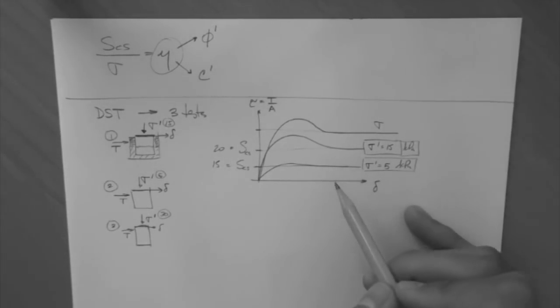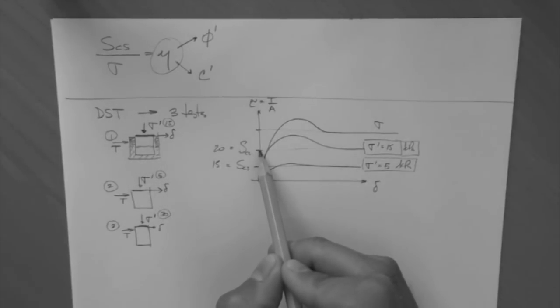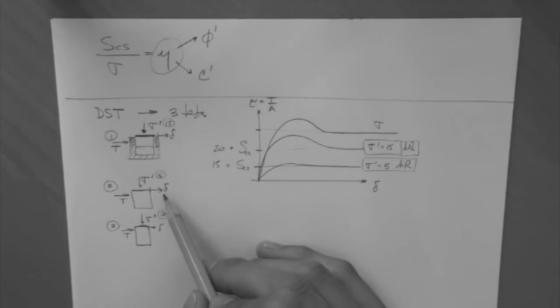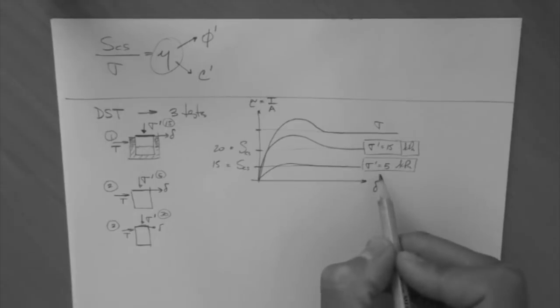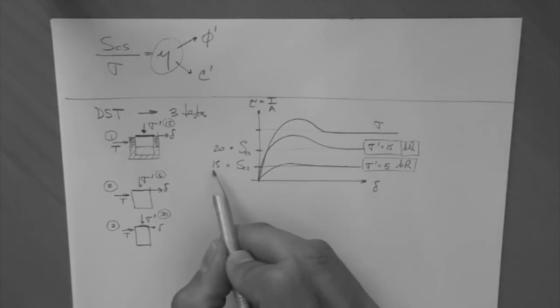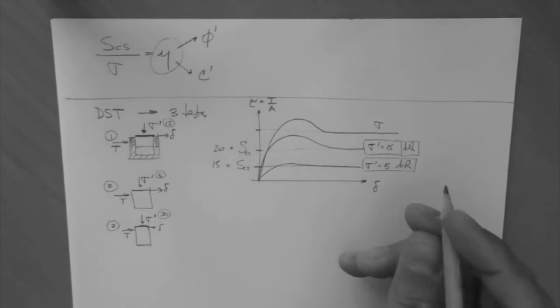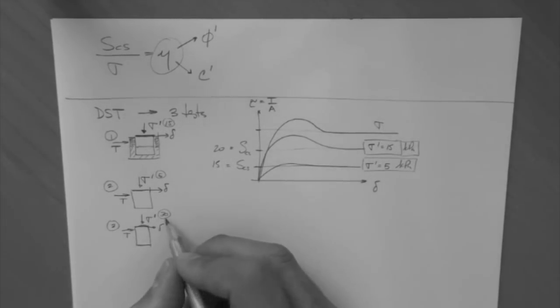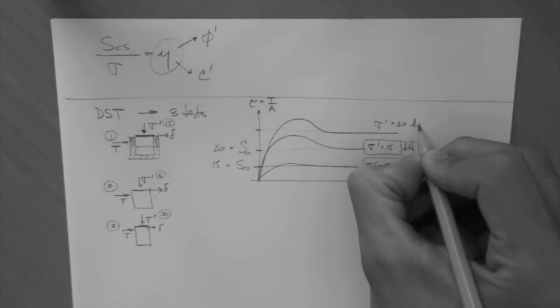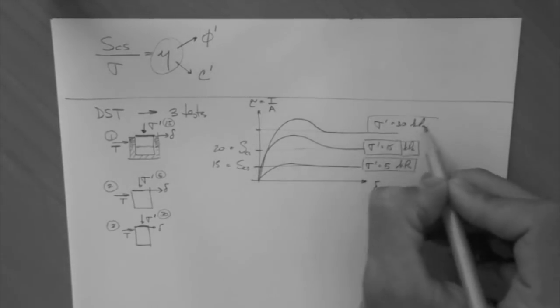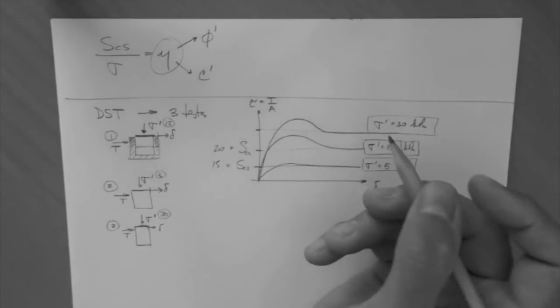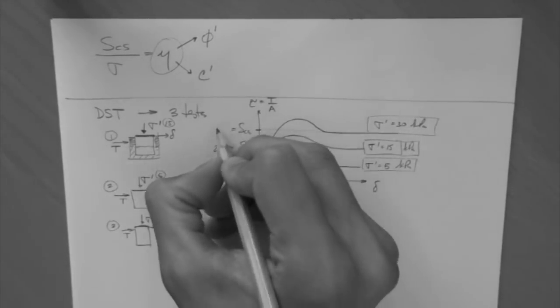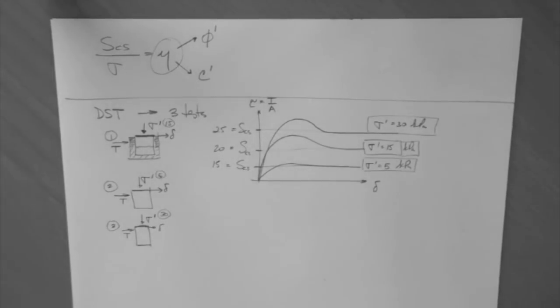So we were saying that we ran one test with 15 kPa. Strength is 20. Another test, with the same soil, another sample, but exactly the same soil. So we applied a stress of 5. We run the test, and we got a strength of 15 kPa. And then the last one we ran with 30 kPa. And the strength we got was 25 kPa.